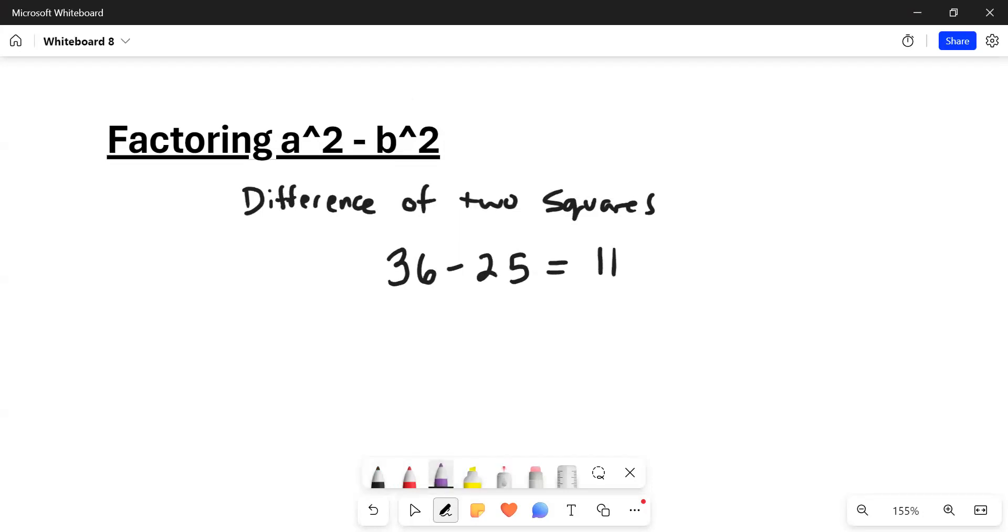But I picked special numbers on purpose. 36 is a perfect square. It happens to be 6 squared, and 25 is also a perfect square. It's 5 squared. And if you subtract those, you should get 11.